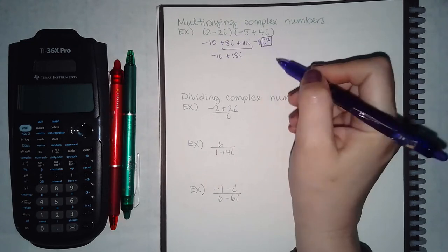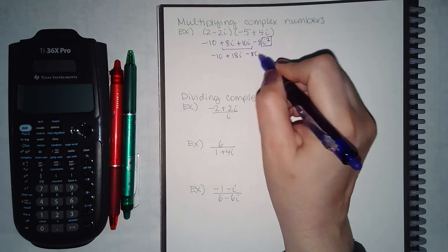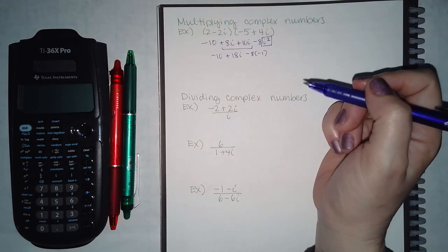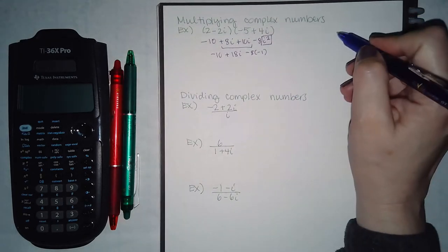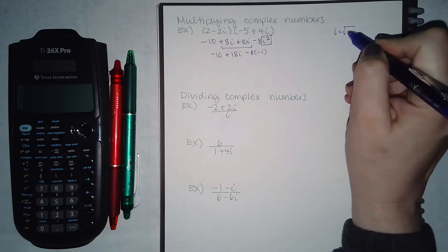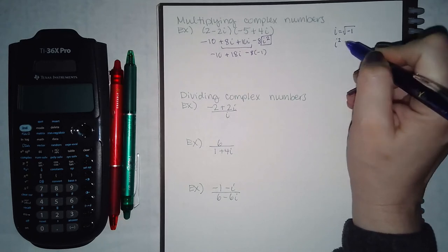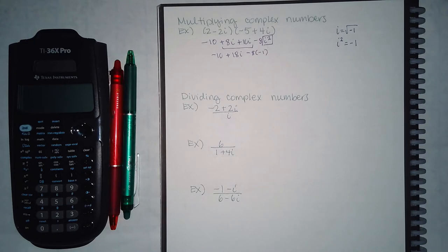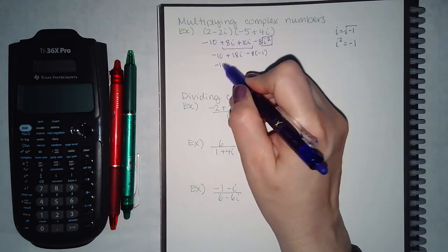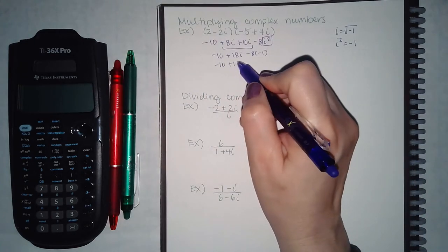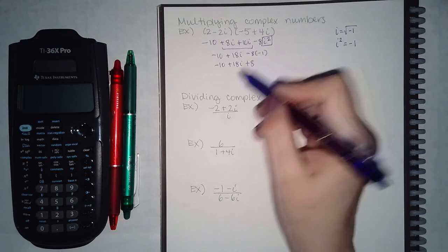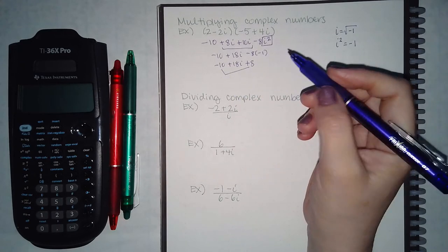I have to change i squared to negative 1. Remember that i is equal to the square root of negative 1, so i squared equals just negative 1. Once I substitute that in, the negative 8i squared becomes positive 8.